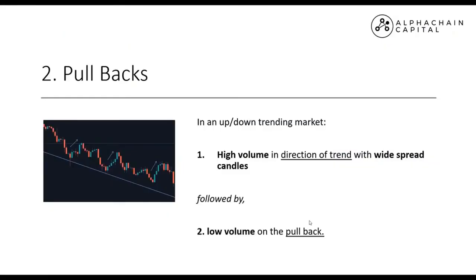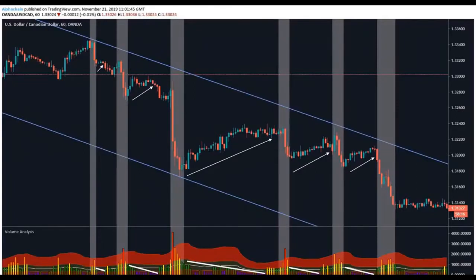We're looking at pullbacks — a quick example of what I mean when we're in a trending market, whether that's down or up, and how to identify when we're seeing a pullback. We're looking for a trending market where you can draw your support and resistance. We want high volume in the direction of the trend with widespread candles, followed by low volume on the pullback.